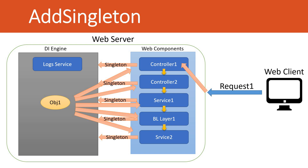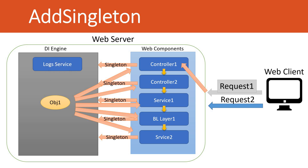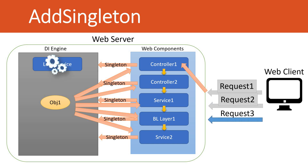So we can see that if you use Add Singleton, the DI engine creates one object and uses that one object across the application. That was for one request. For any number of requests from the web client, the same behavior repeats. The DI engine creates an instance only once and shares that single instance to any component inside your application — for the second request, third request, and so on. That is what happens with Add Singleton: any number of requests, any number of dependency injections, the DI engine creates only one object and shares it across the application.